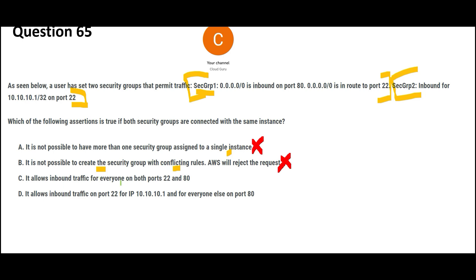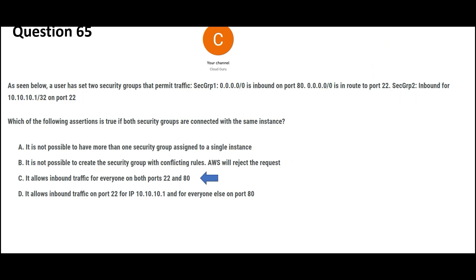Option C says this will allow inbound traffic for everyone on both ports 22 and 80, which is correct — inbound on port 80 and inbound on port 22, allowing everything. That looks to be the right answer. Option D says it will allow inbound on port 22 only for a specific address, but it actually gives a range, so it will not be limited to that single address. Therefore D is wrong, and option C is my answer.